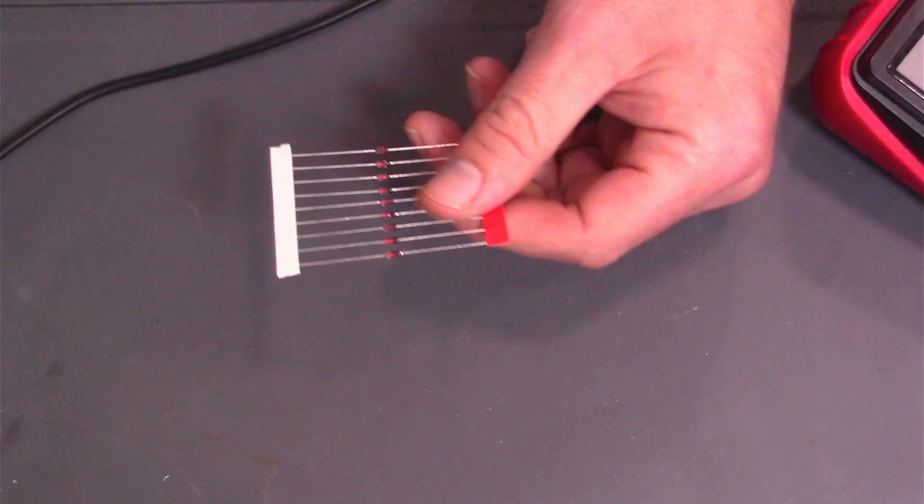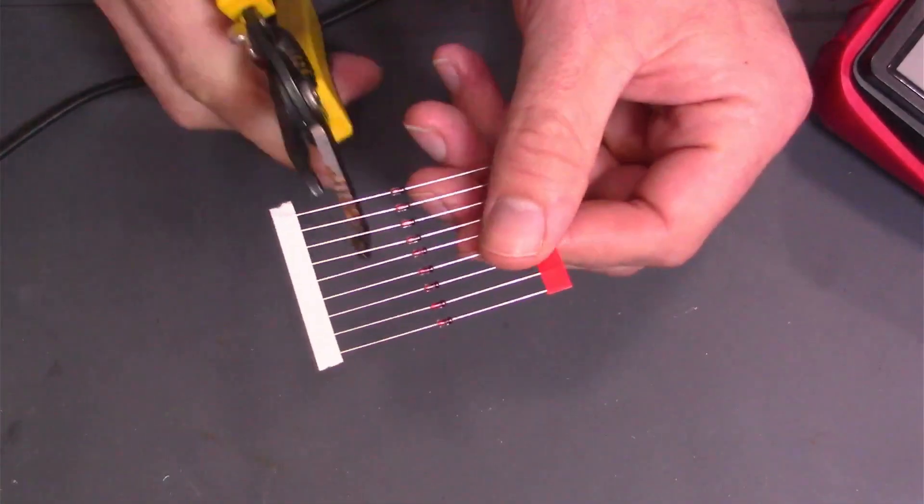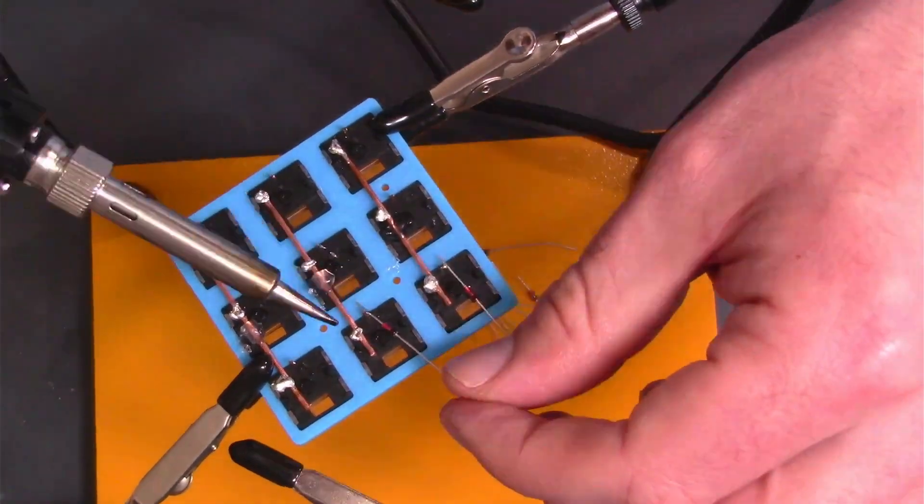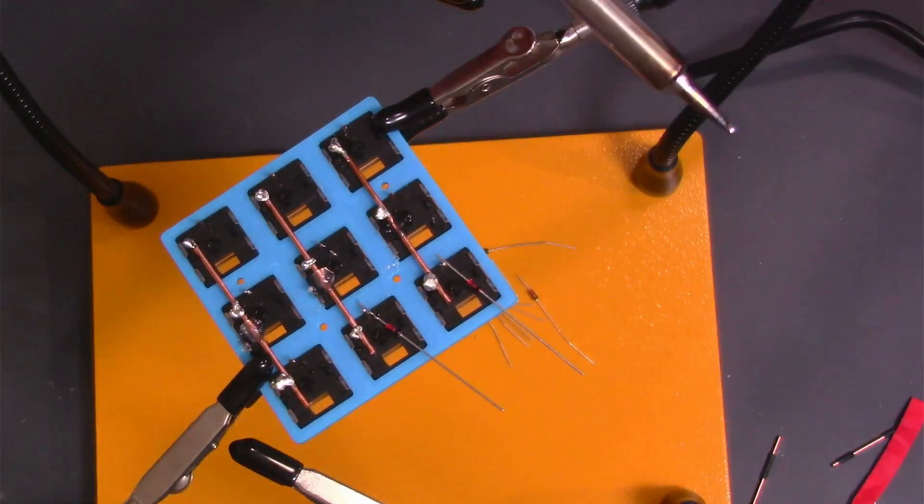The other pins on the keyboard switches get a diode. After soldering them to the switches, I'll solder them all together with a copper wire.